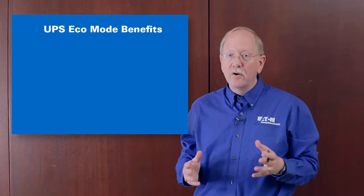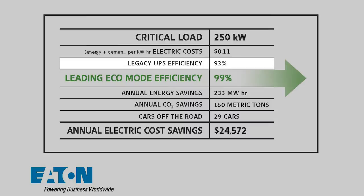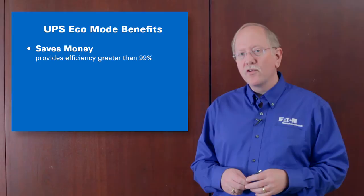The main reason for having eco mode is saving money. So, just as an example, let's take a look at a medium-sized UPS. Here we have a 250 kilowatt UPS, compared against a legacy UPS that's 93% efficient, using an eco mode UPS at 99%, and the savings at 11 cents a kilowatt hour are $24,500 per year of operation. Significant savings, and will actually repay the cost of the UPS within two to three years.